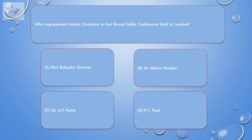Question: Who represented Indian Christians in the first Round Table Conference held in London? A. Rao Bahadur Srinivas, B. Sir Akbar Hadari, C. Sir A.P. Patron, D. K.T. Paul.